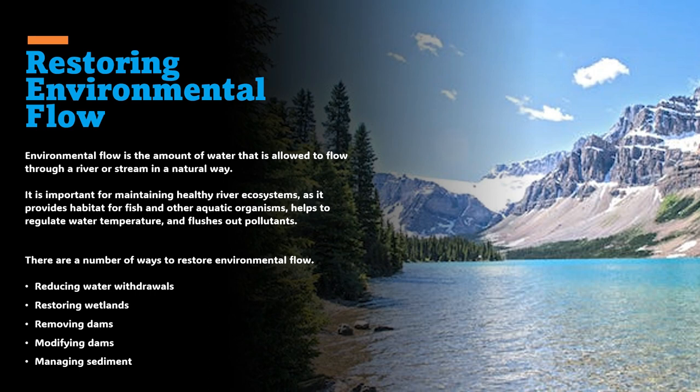The second approach is restoring wetlands, which help to store water and release it slowly, helping to maintain natural flow regimes. Removing dams can help restore natural water regimes and improve fish populations. Alternatively, dams can be modified to allow more water to flow downstream by raising the height of dams, increasing the width of spillways, or installing fish ladders. Sediment can also be managed to maintain the natural distribution of sediment in a river.